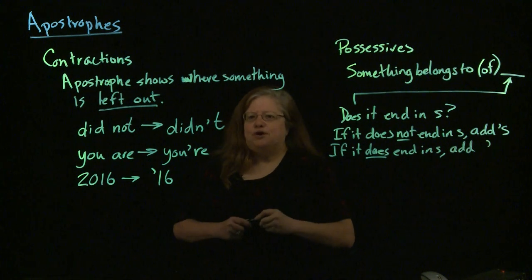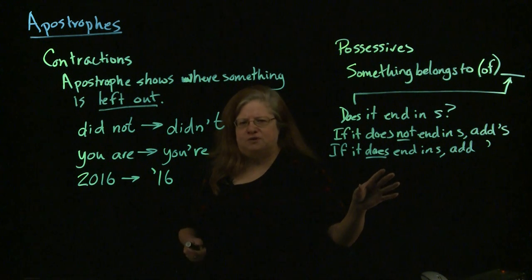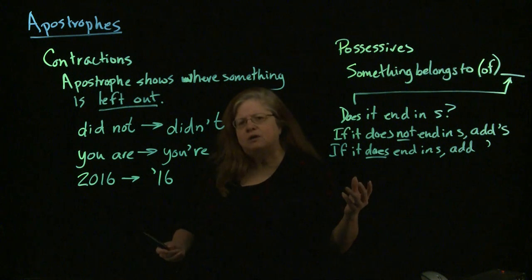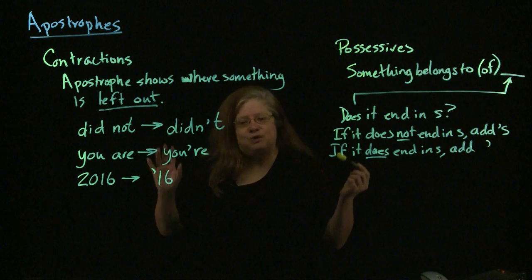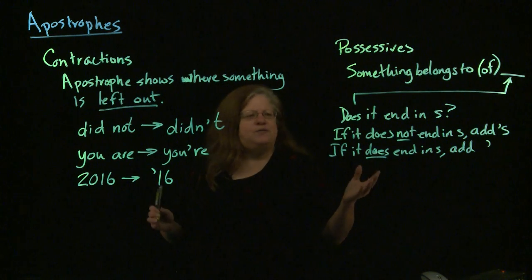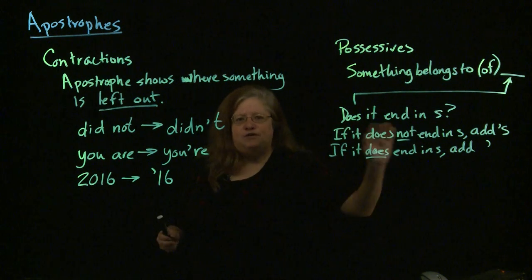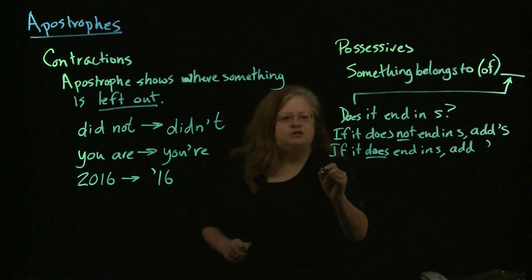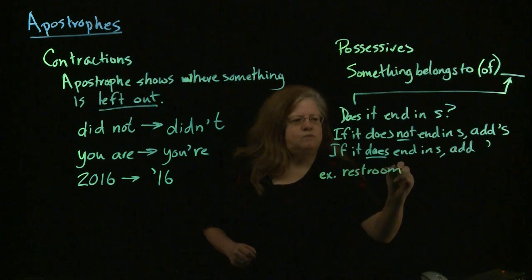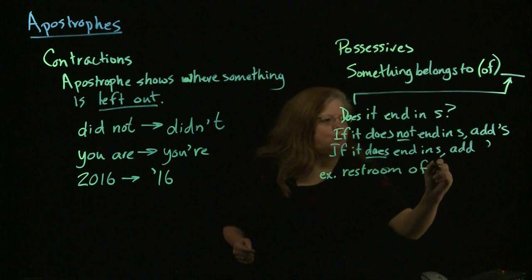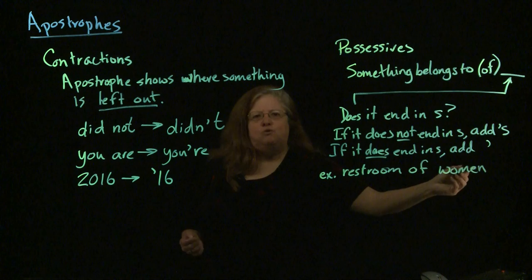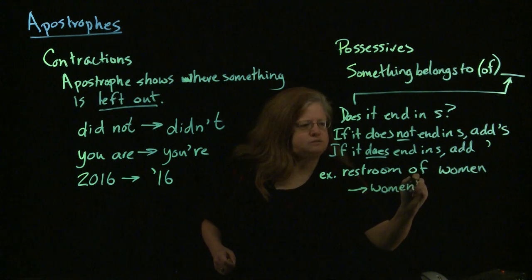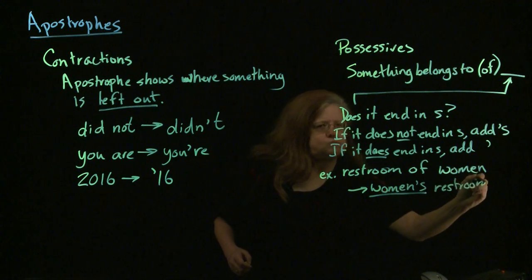You don't have to worry about whether it's singular or plural. Some grammar books do make it more complicated — they'll say add apostrophe S even if it ends with S if it's a singular person's name, unless it's someone famous like Moses or Jesus. Don't worry about that. Just keep it really simple: if it already ends with an S, just stick the apostrophe on. If it doesn't end in S, stick on apostrophe S. For example, if we have a restroom belonging to women — women is plural, but we don't care about that. It doesn't end with S, so we have 'women's restroom' with apostrophe S at the end.